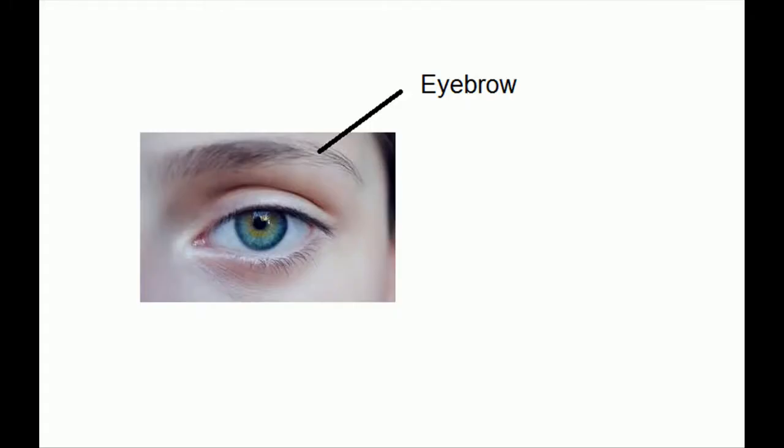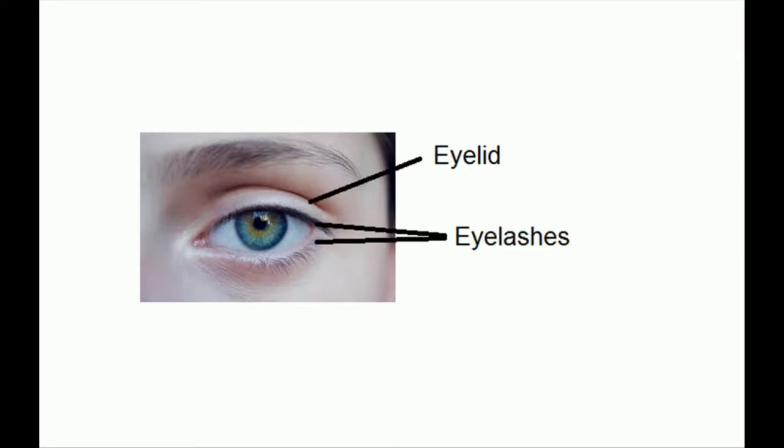The eyebrows stop sweat from going into our eyes. The eyelid and the eyelashes protect our eyes from the air, excess light, and foreign bodies.